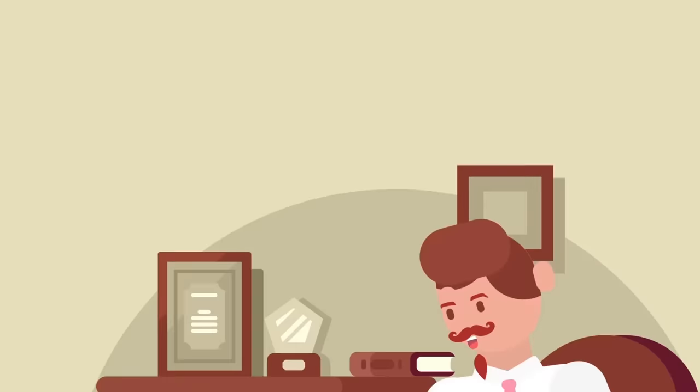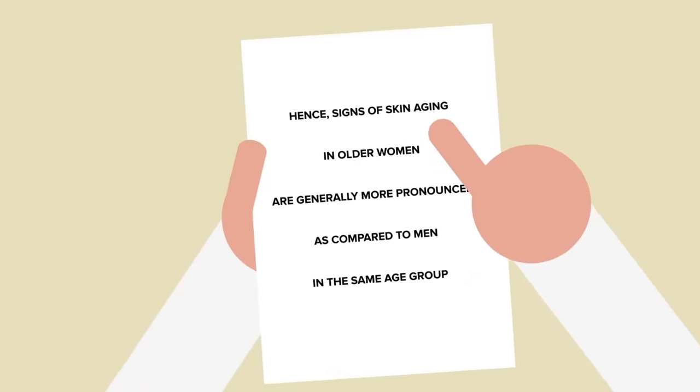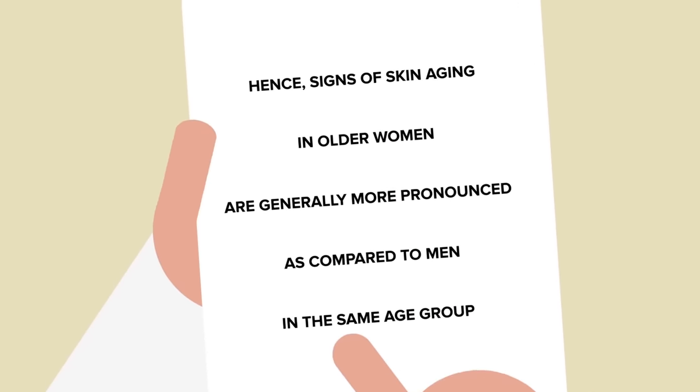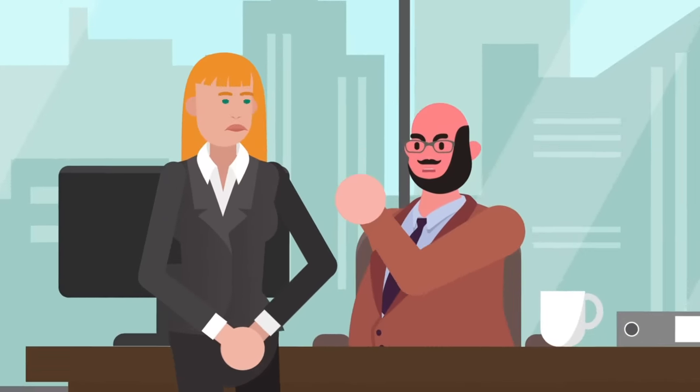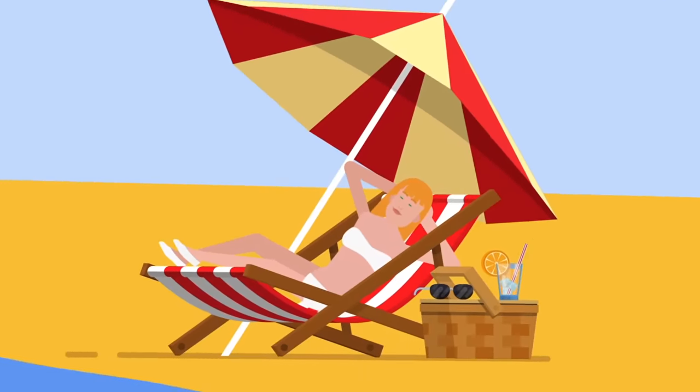Sorry, women. As one scientist put it, female skin thinning occurs at a significant pace after menopause. Hence, signs of skin aging in older women are generally more pronounced as compared to men in the same age group. Still, there are many factors such as work, stress, and how many days you've been under the sun trying to get a tan or grow some rice.